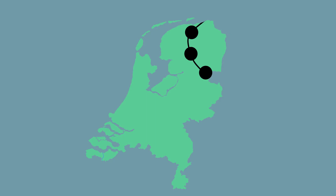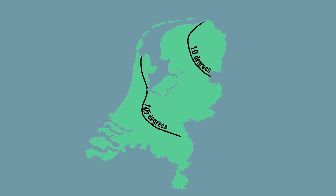This creates a line where the average temperature on the entire line is 10 degrees. We can also connect points where the average temperature is 10.5 degrees — that creates a new line. Finally, we can draw an 11 degree line.